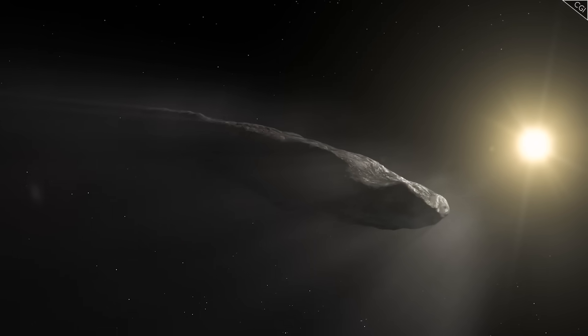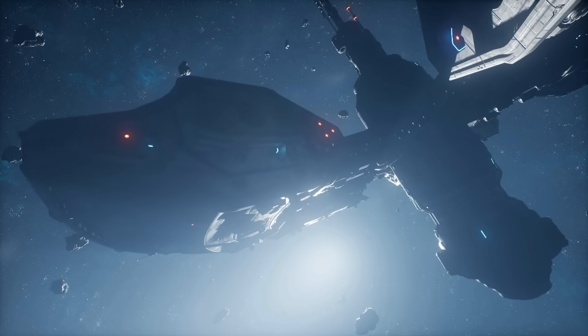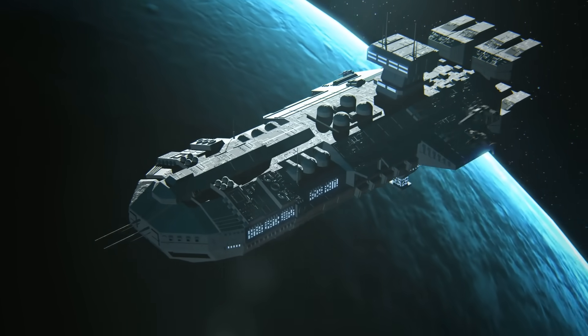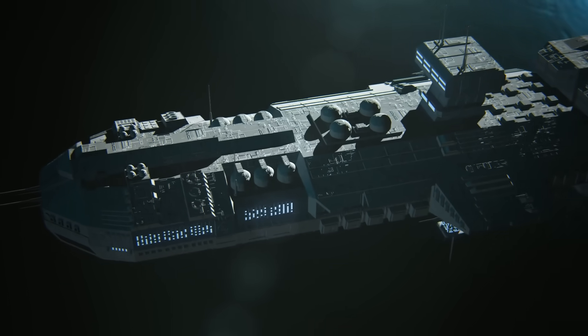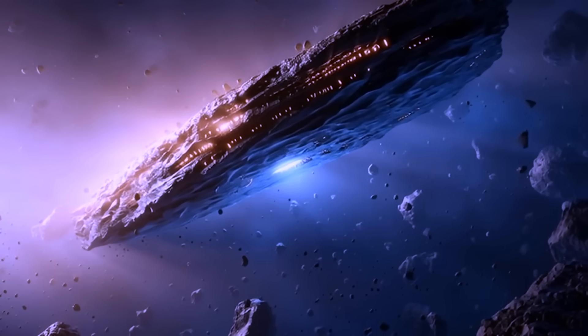In that case, 3I Atlas isn't just a comet. It's a machine, a probe sent to observe, record, and possibly communicate. Its smooth metallic surface, its stable orientation, its ability to withstand solar radiation. These wouldn't be anomalies. They'd be features.